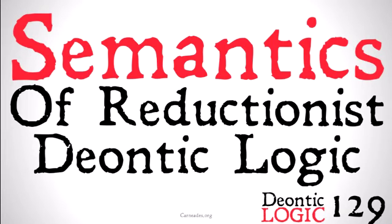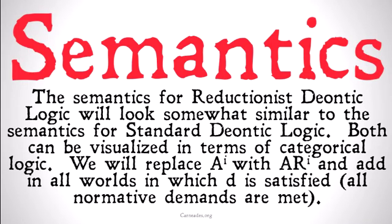Semantics are the official and rigorous meanings of all the concepts we have. Now that we have a different kind of deontic logic — reductionist deontic logic, specifically KD — we're going to look at what those semantics look like. The semantics for reductionist deontic logic are going to look somewhat similar to the semantics for standard deontic logic. Both can be visualized in terms of categorical logic, and we're going to replace AI with ARI and add in all worlds in which D is satisfied. So instead of two circles, we're going to have three.